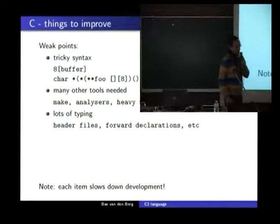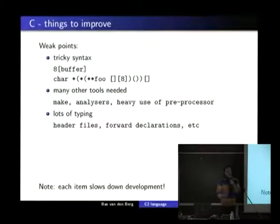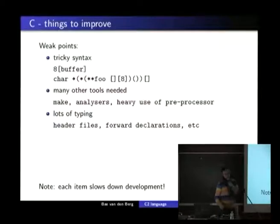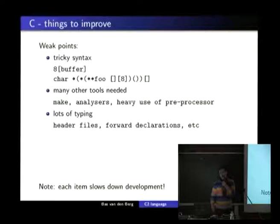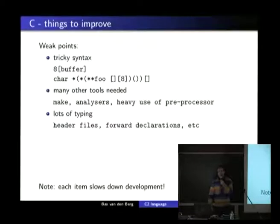There were also some things that I felt were not so good. C is probably older than me, and every day I learn new things about C while I've been programming it for 15 years already. Last week I found out this is possible — you can just swap a buffer and the index, it doesn't matter. It surprised me. And the next one, that's some type definition. You probably need a Nobel Prize to read this.